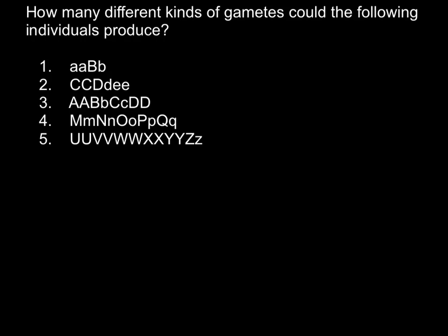As you see, we have five different genotypes, and in order to find how many different variants of gametes they can produce, we can use common sense and logic. This would be easier for examples 1 and 2, but when we solve this for numbers 3 and 4, it would be time consuming, so it's better to use the formula I am going to show you today. This will take only seconds to solve these problems.